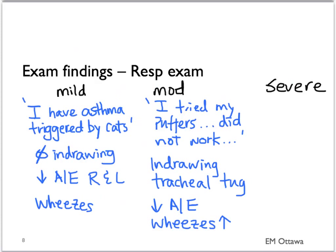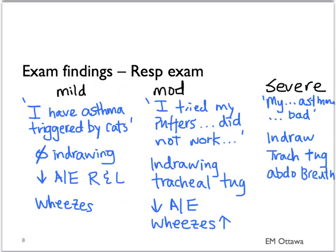In severe asthma, the patient may only be able to say one word at a time. There is more in-drawing and tracheal tugging. They may also have abdominal breathing. On auscultation, you might hear a very quiet chest with little air entry and no wheezes, since there is no air going through the airway to produce the wheezes.